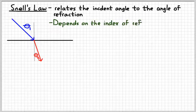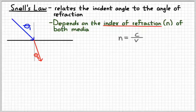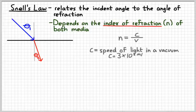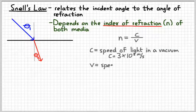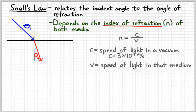The angle depends on something called the index of refraction of both media. And the index of refraction is defined as the speed of light in a vacuum, which is c, divided by the velocity in that medium, which is v. So we write n equals c over v. C is the speed of light in a vacuum, which is three times ten to the eighth meters per second. That's a constant. V is the speed of light in that particular medium.